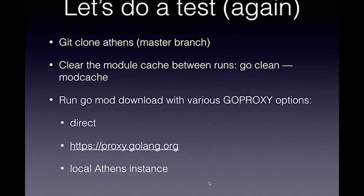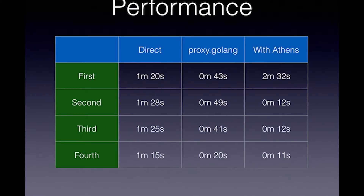We can do the same test again — I've prepared a handy table where I did a go mod download on the Athens proxy, clearing it out between runs, on a different network connection. As you can see, direct doesn't take too long in this case, but for something like Kubernetes dependencies it can take minutes. So in those cases it makes sense to use a proxy — either Athens or proxy.golang.org itself. The proxy.golang.org seems to make a difference and will be the default value, so that's going to help everybody.